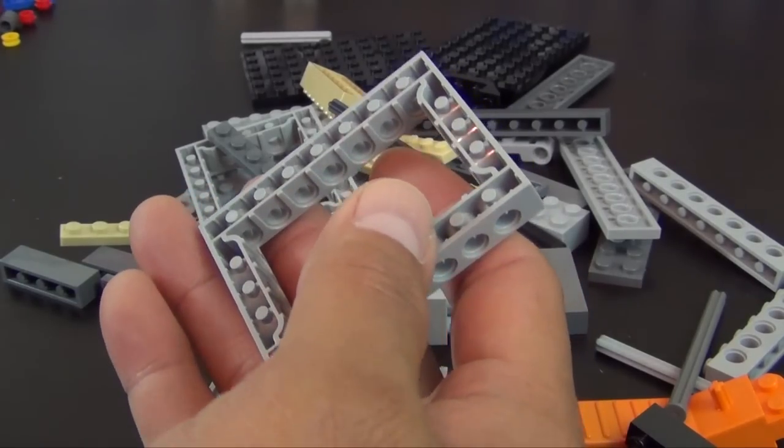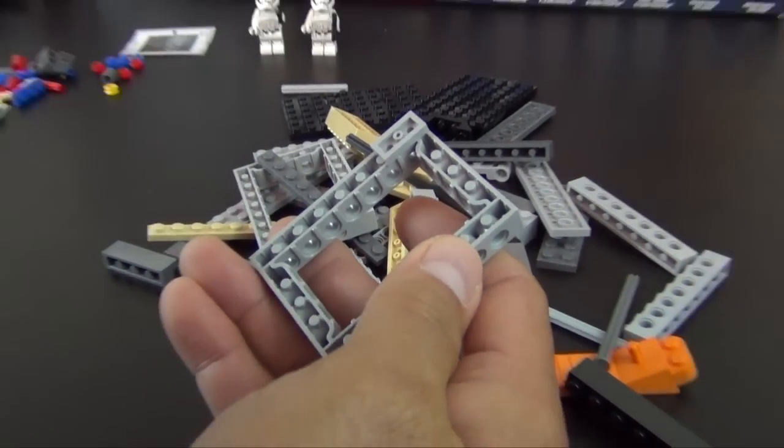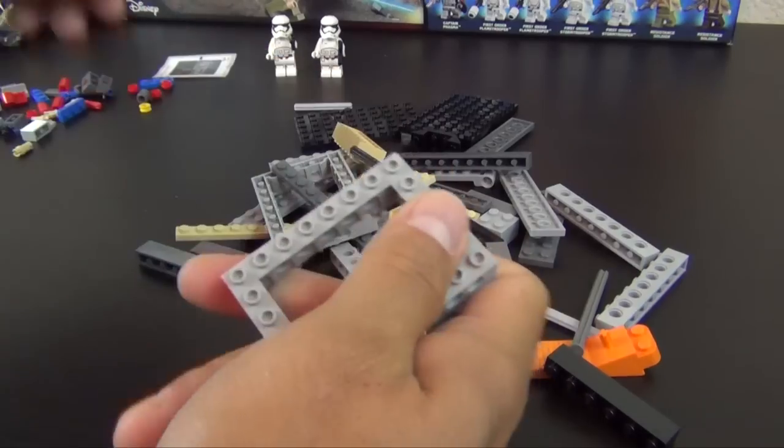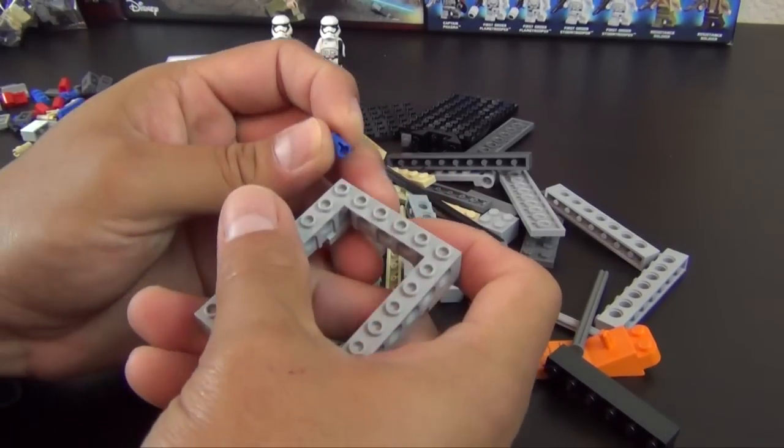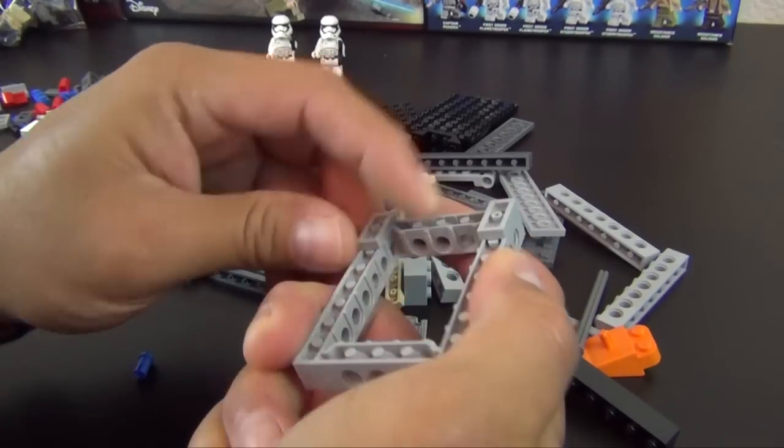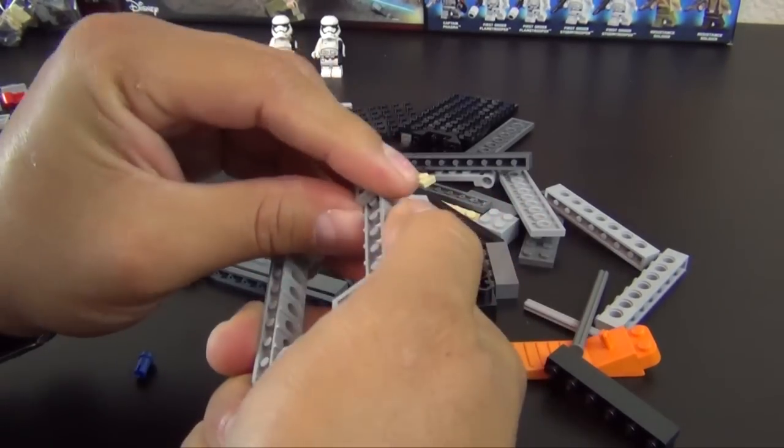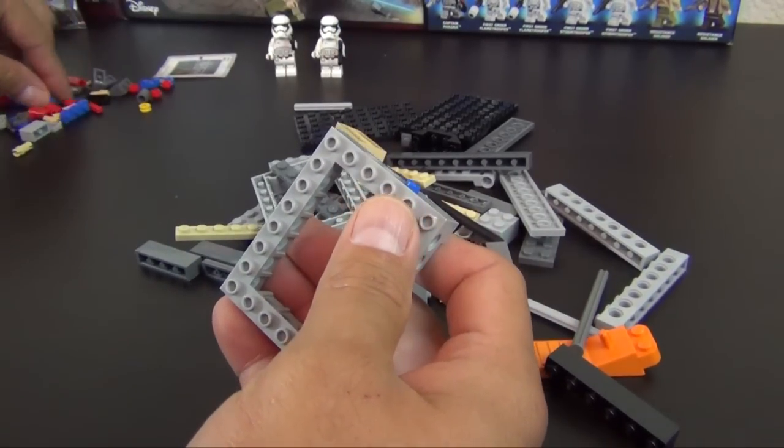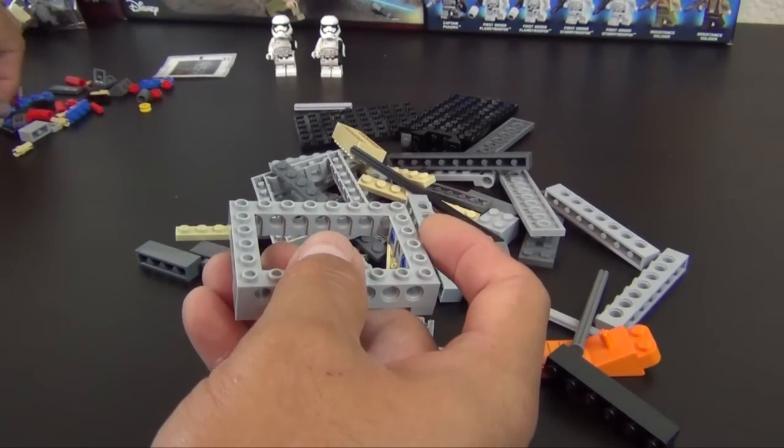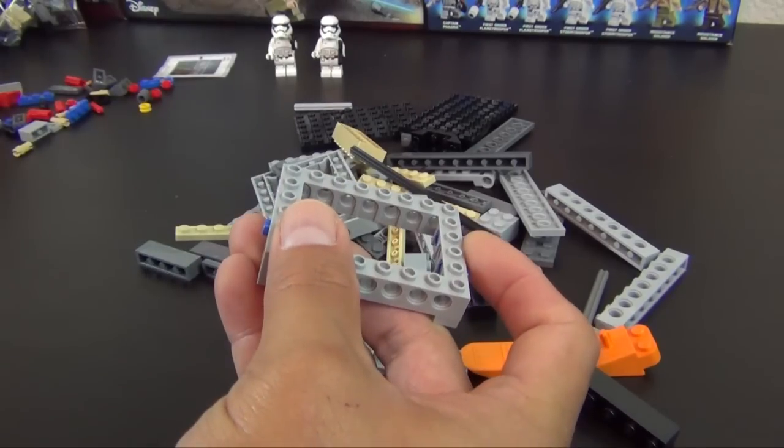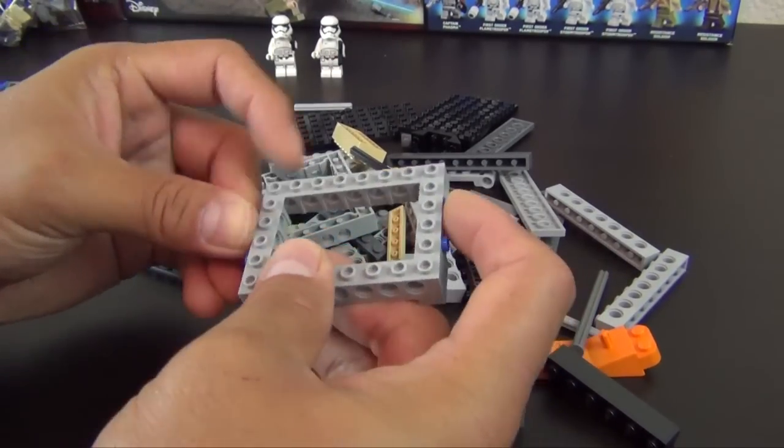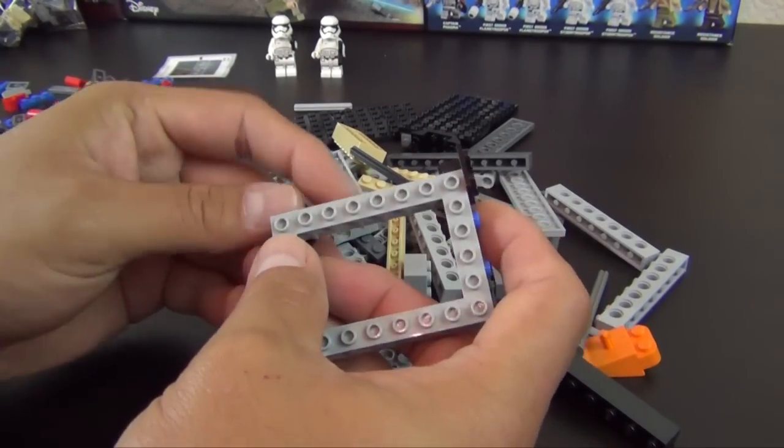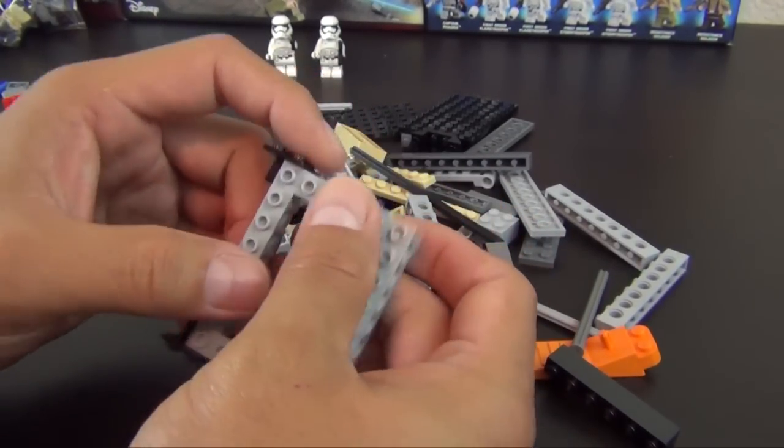Alright, so now we're just going to jump right into the build. Let's start with the technic boxed frame. So right away I'm doing it wrong - I put these in the wrong spot. Alright, now we're back on our way. What I was going to say is right away we're adding some technic stuff that's going to make this build pretty strong. Anytime you see technic elements in a build, that means it's going to be real strong. Guaranteed, unless you do it wrong.